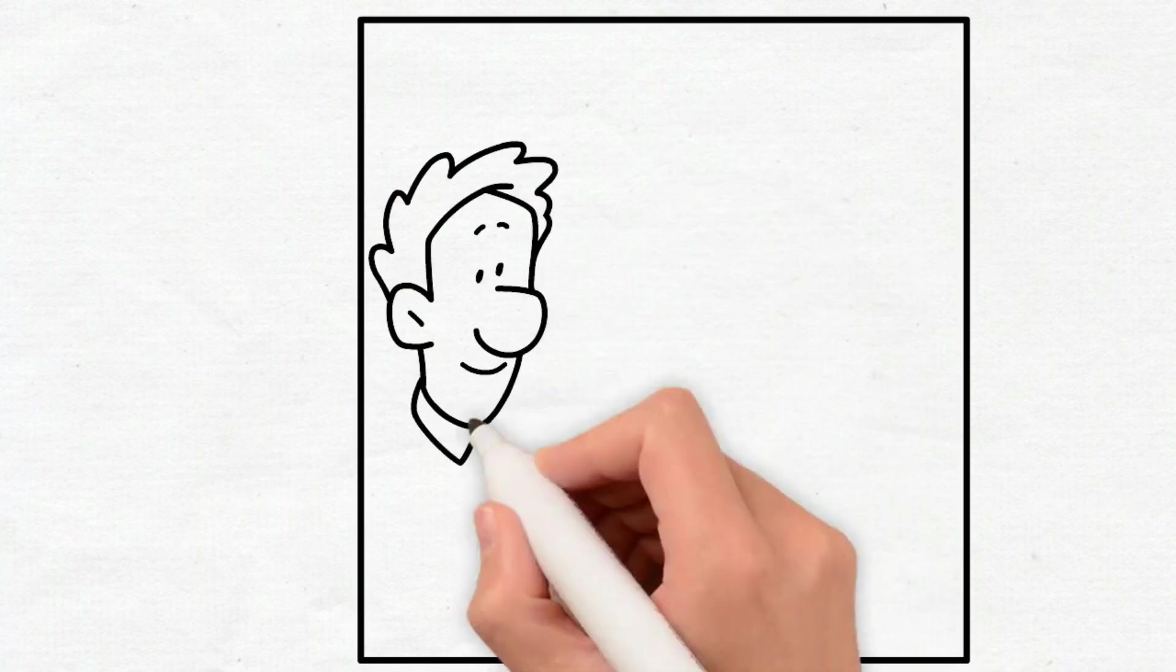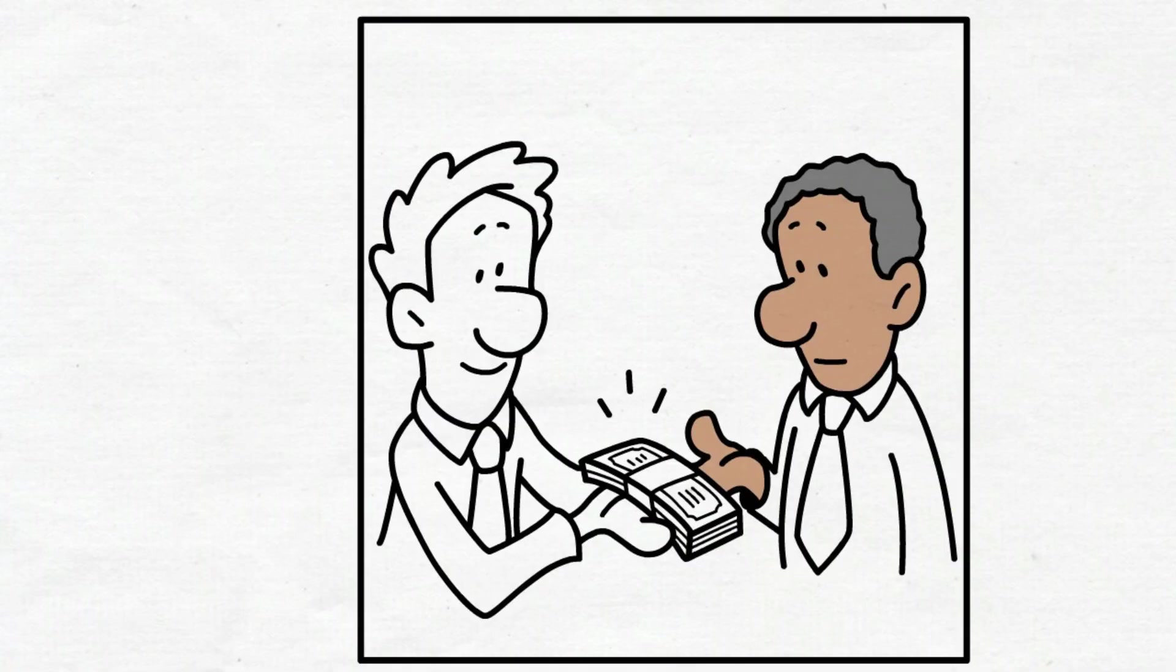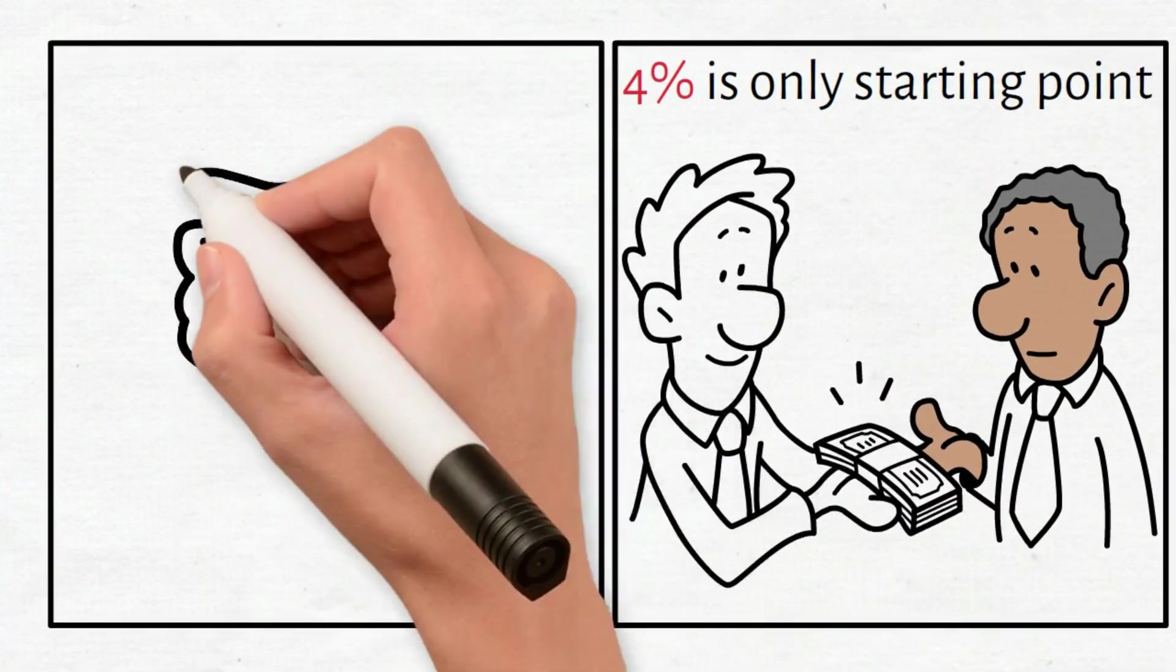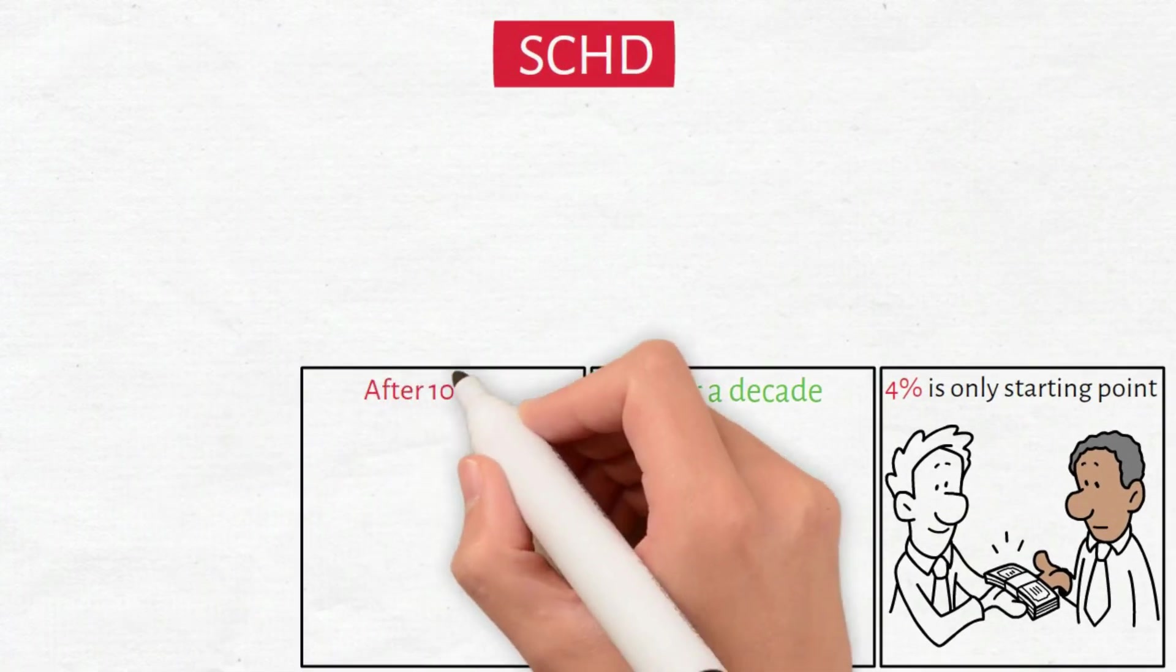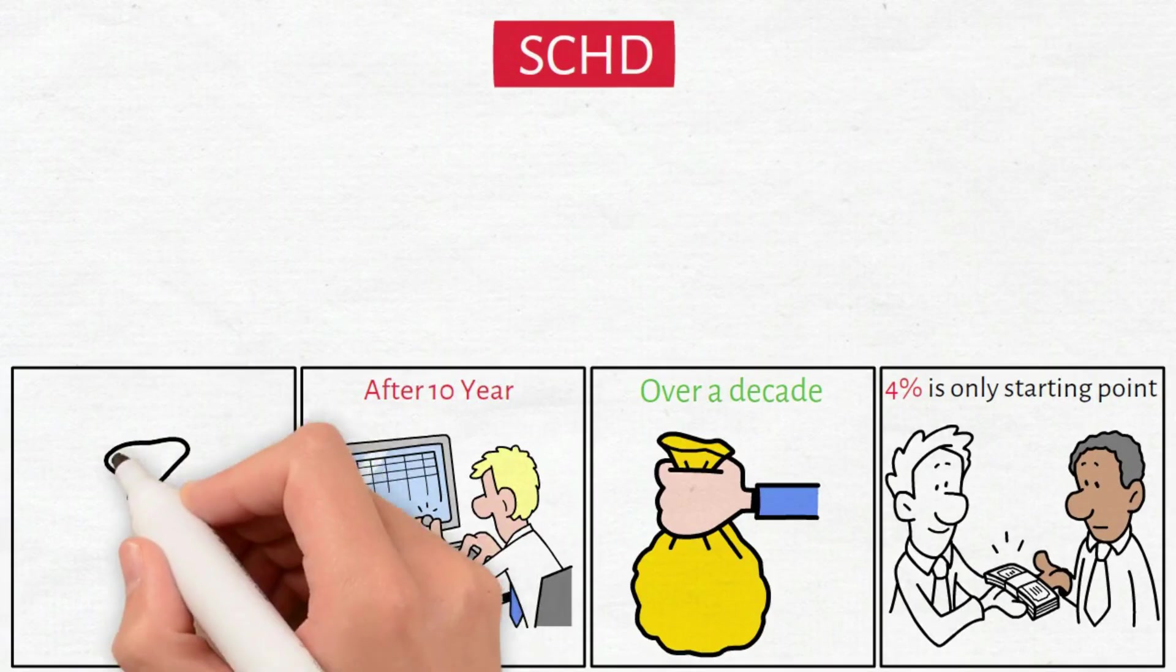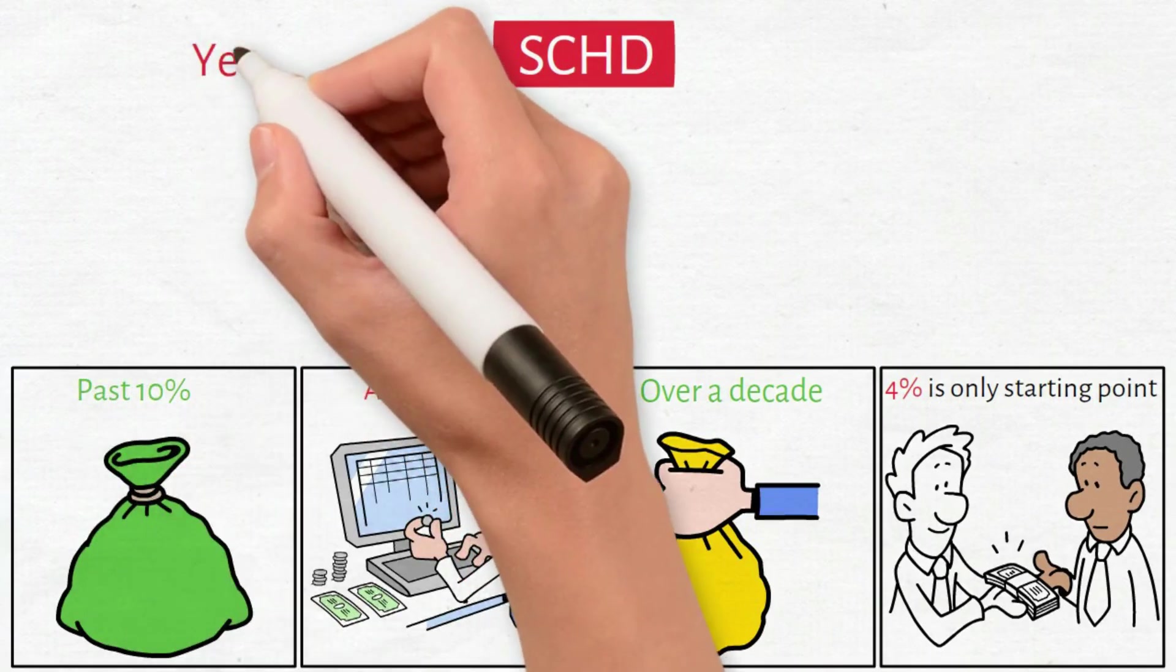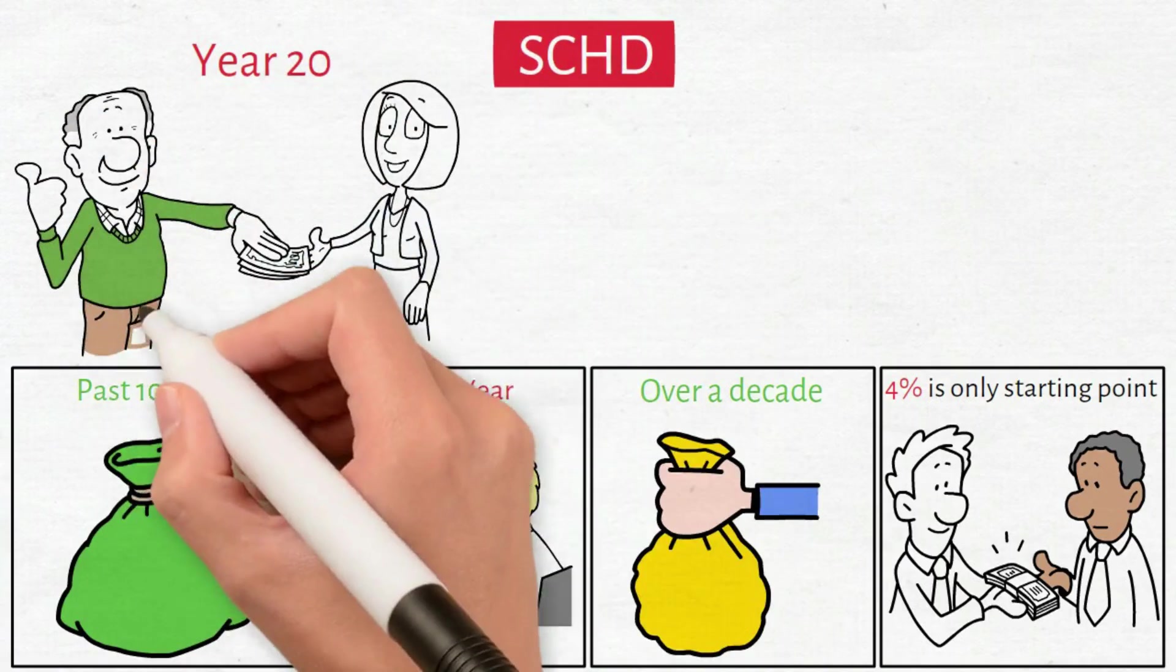Most people see a dividend yield around 4% and think it's ordinary. They're missing the entire picture. That 4% is only your starting point. SCHD has grown payouts at double-digit rates for over a decade. Give this 10 years with reinvestment and your effective yield on original capital climbs past 10%. By year 20, you're collecting double-digit returns annually on money invested decades earlier.